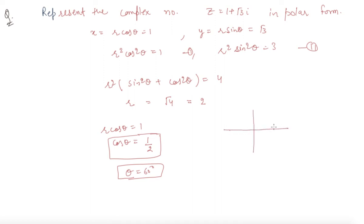You can check on the graph also: 1 and root 3. It will lie something here and the angle which it is making is 60 degrees. Now you can write it in the form 2 times (cos 60 degrees plus iota sin 60 degrees). This is the polar representation of the complex number, student.